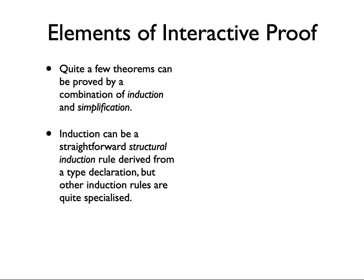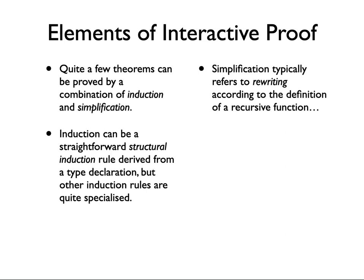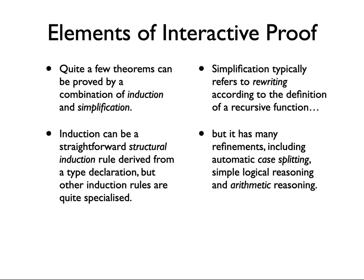We are first going to see the obvious induction rules that you'll have seen in any discrete mathematics course, like the list induction rule we had in the previous lecture. It turns out that you can have some really quite interesting induction rules, and still the principles are the same. Often the choice of induction rule has a huge impact on how difficult your proof is. We saw examples last time of proving things with Auto, and we'll look in much more detail on how rewriting actually works, including logical case splitting, arithmetic, and other things.